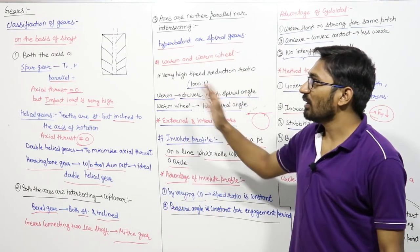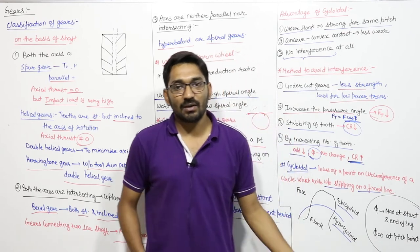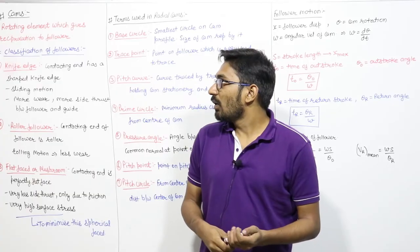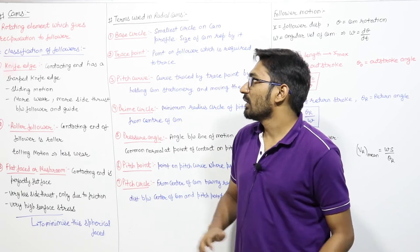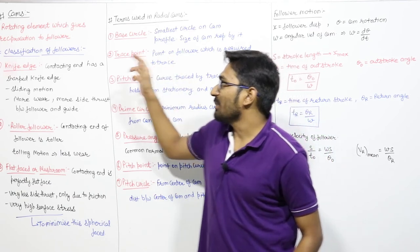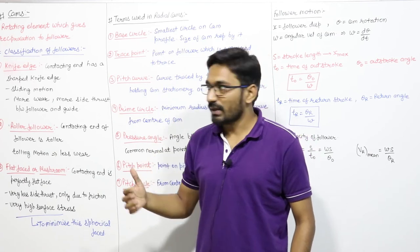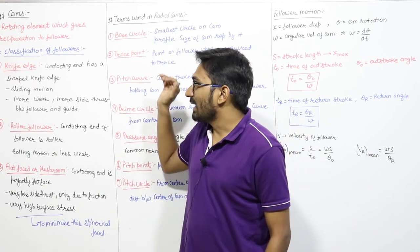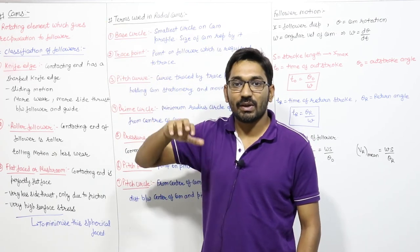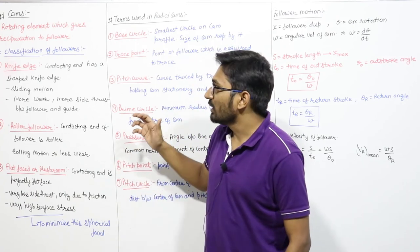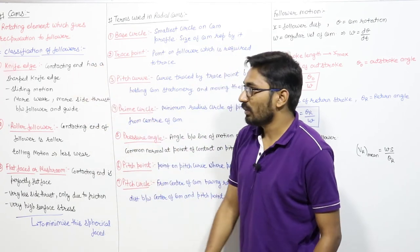This is the theory of gears useful for the Coal India Limited exam. Now let us discuss the chapter on cams. A cam is a rotating element which gives reciprocating motion to the follower. Cams are used in various machines, like IC engines. Let us discuss the classification of followers.